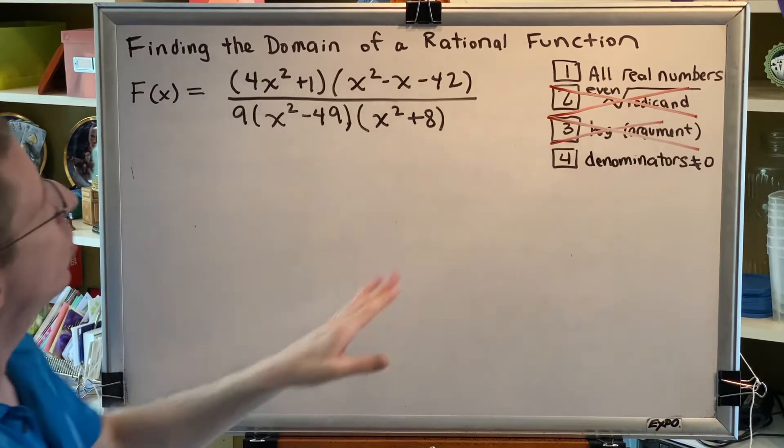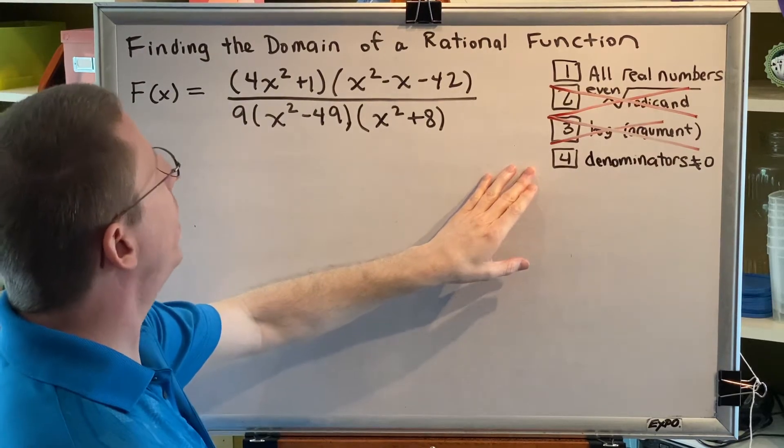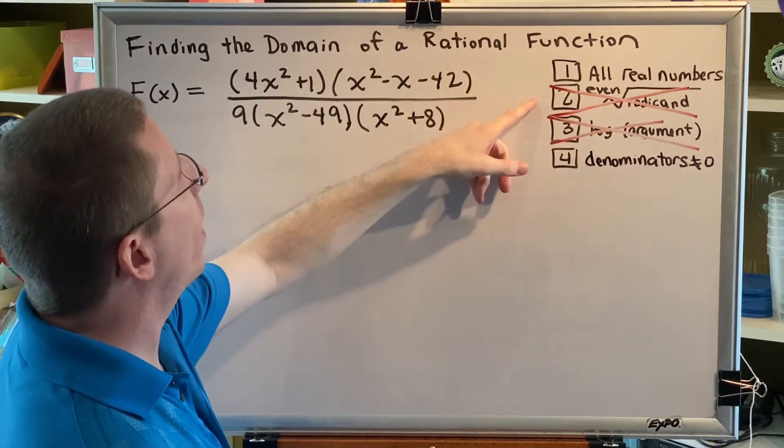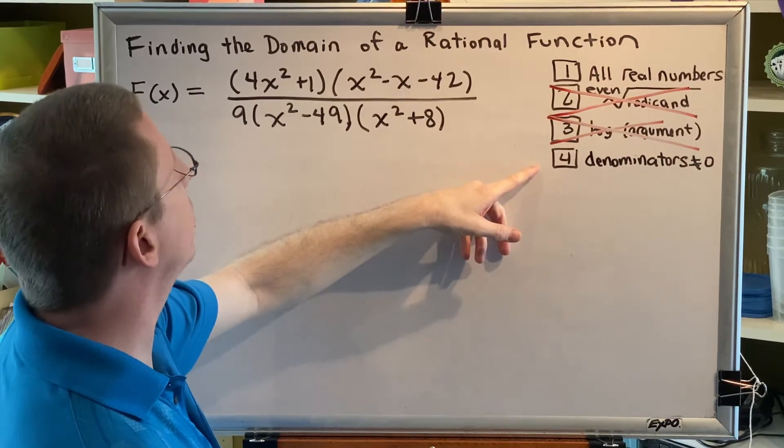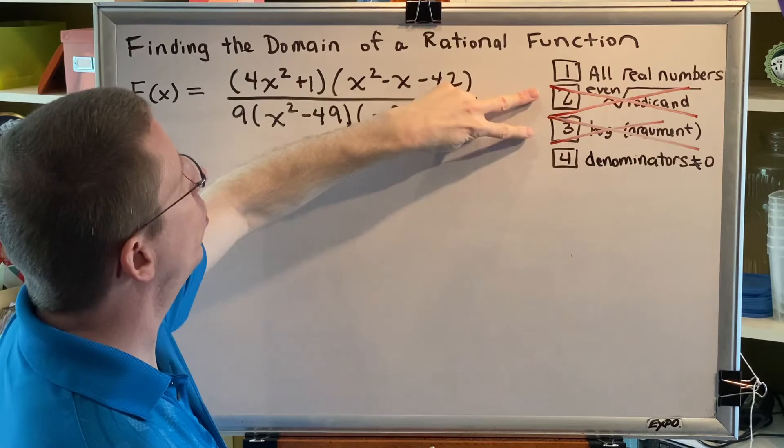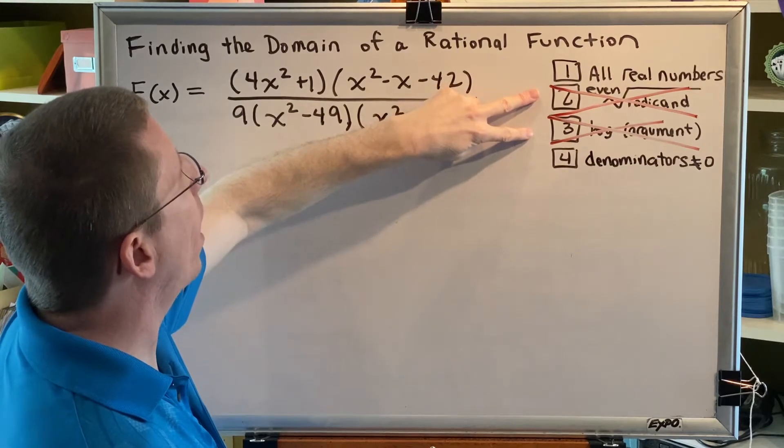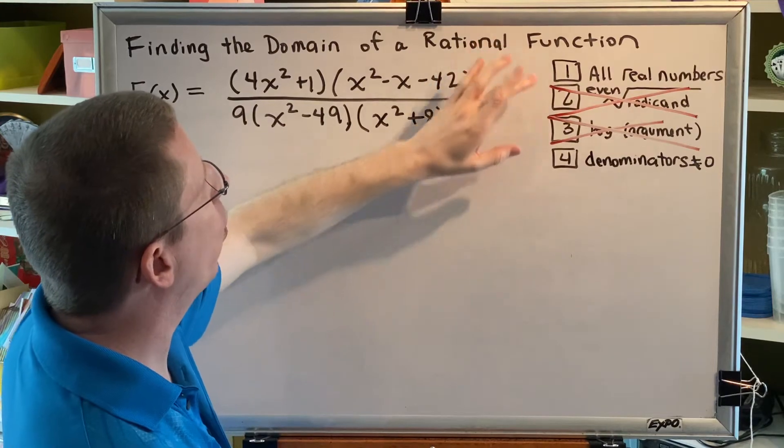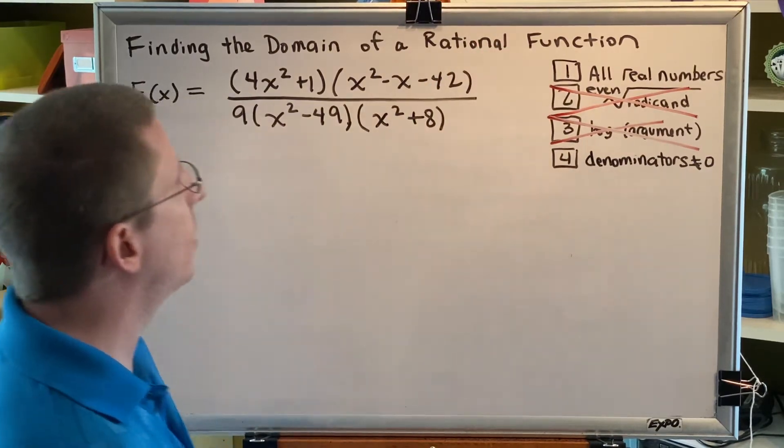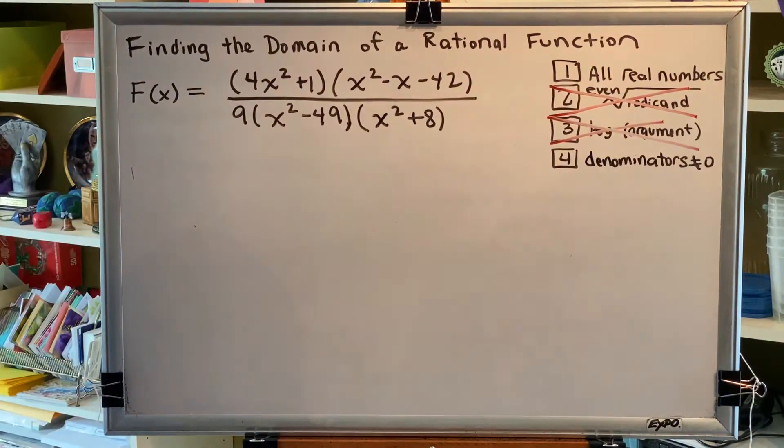There are four steps for finding the domain: all real numbers, even radicands greater than or equal to zero, log arguments greater than zero, and denominators not equal to zero. But for a rational function, we will not have any radicals or logs, so we only perform steps 1 and 4. Step 1: start with all real numbers. Step 4: denominators not equal to zero.